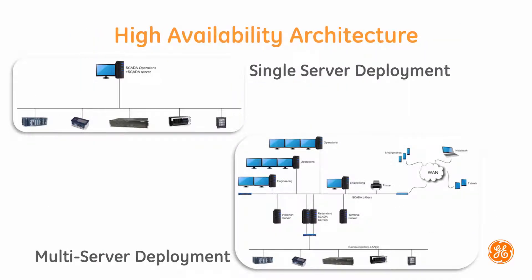iPower provides a scalable architecture for high availability and system growth. It can be deployed in a single-server solution for smaller requirements, but provides the flexibility to be deployed in a multi-server configuration for redundancy and dedicated tasks.